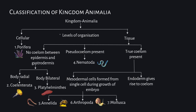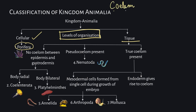When we talk about levels of organization, plants that have their body organization at the cellular level come under the phylum Porifera. Then you have organisms that have their body organization at the tissue level, meaning the primitive cellular level has differentiated into certain tissues. This can be further divided on the basis of the presence of a coelum, which you can understand as an internal body cavity.